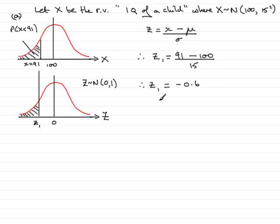So we now want this probability. The probability of x being less than 91 is exactly the same as working out the probability that z is less than minus 0.6.